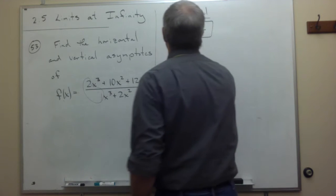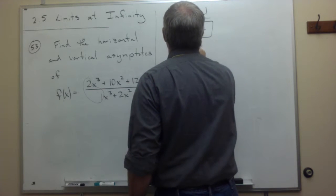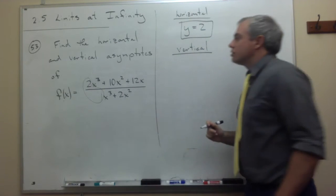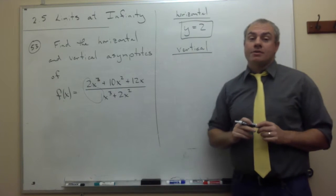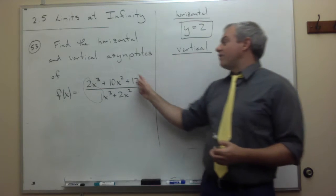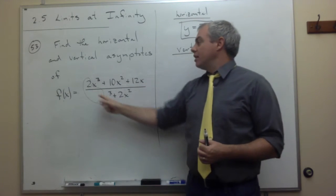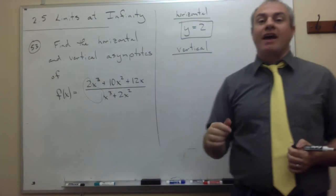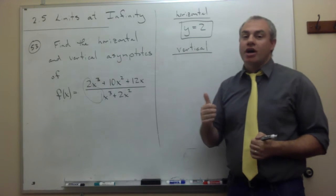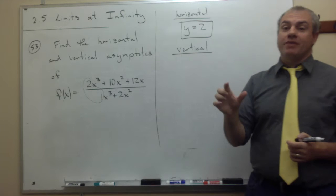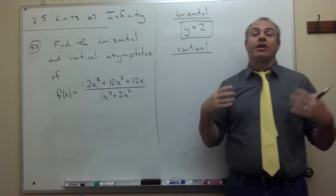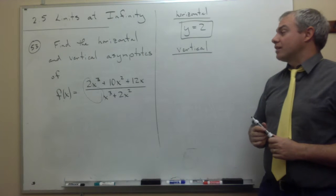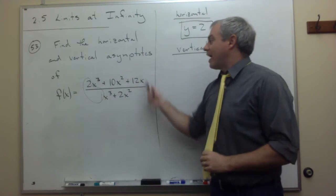I also need to find the vertical asymptotes. To find the vertical asymptotes, what I want to do is factor this completely, and then look for factors on the bottom that have nothing to cancel them out on the top. Remember, if they do have something to cancel them out on the top, then they're just holes in the graph. But if they do not, then they represent vertical asymptotes. So I need to factor this thing.